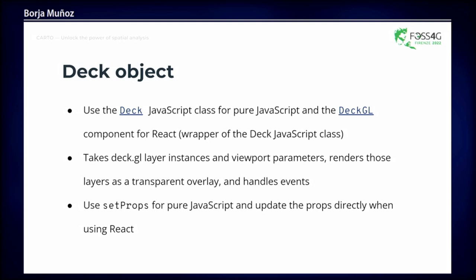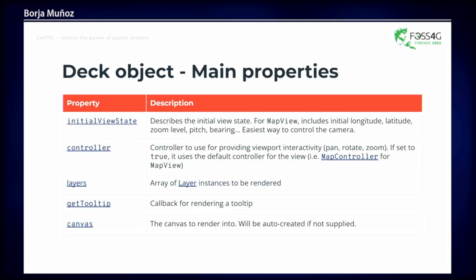Let's start with some key concepts. The first is the Deck object, which is equivalent to the map object in other libraries like Mapbox, Leaflet, or OpenLayers. It takes layer instances and viewer parameters, renders the layers as a transparent overlay on top of the base map, and handles events. Everything works with properties using a declarative React approach. The main properties include the initial view state for setting view parameters and the collection of layers.